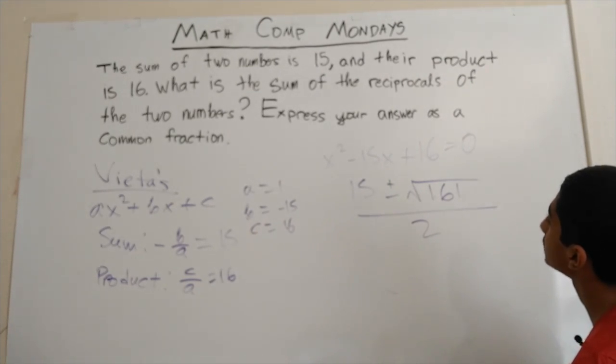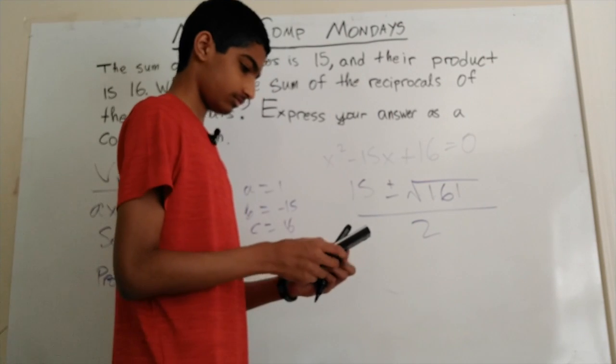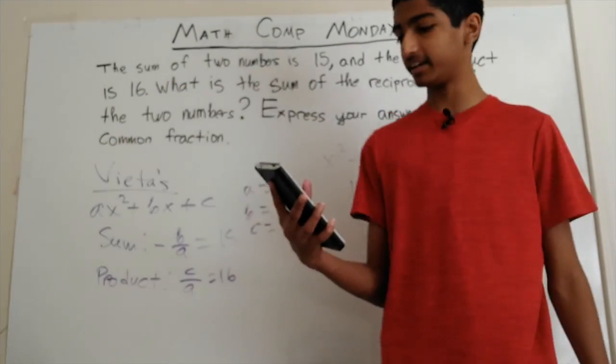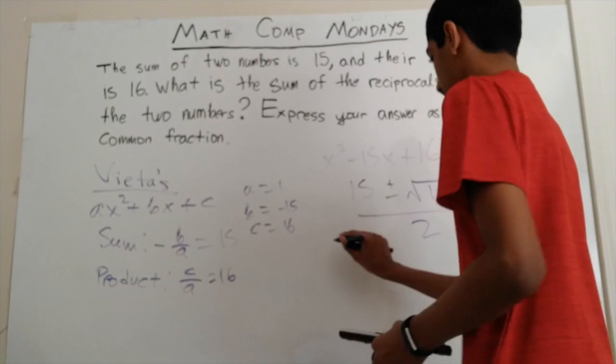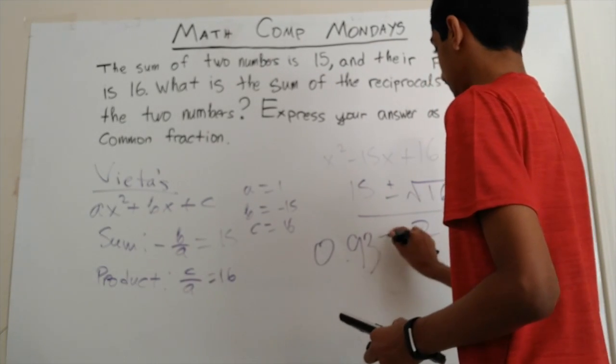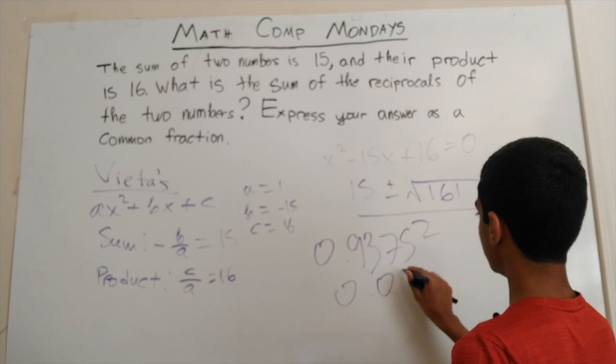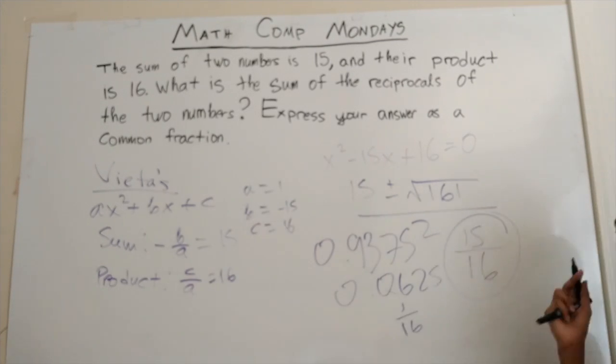So now we have to find the sum of the reciprocals of the two numbers. And this is almost impossible without a calculator, even though this is part of a non-calculator math competition. So let me go get my calculator out. Okay, so I just typed it into my calculator and I got the answer: 0.9375. And this is a difference of 0.0625, which is 1/16. So the answer is 13 over 16. And that's our answer.